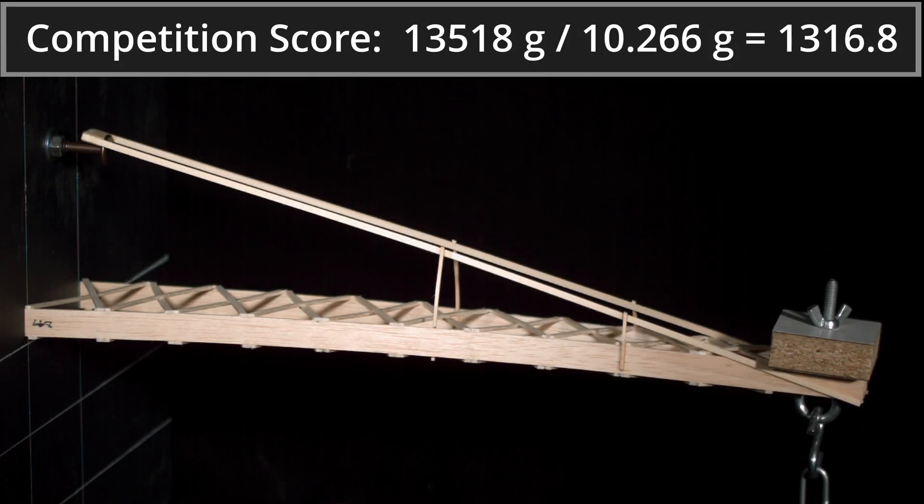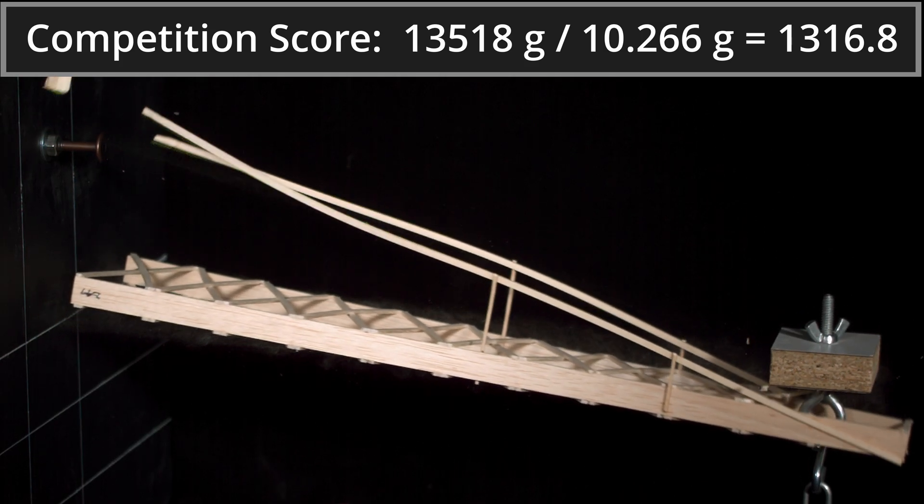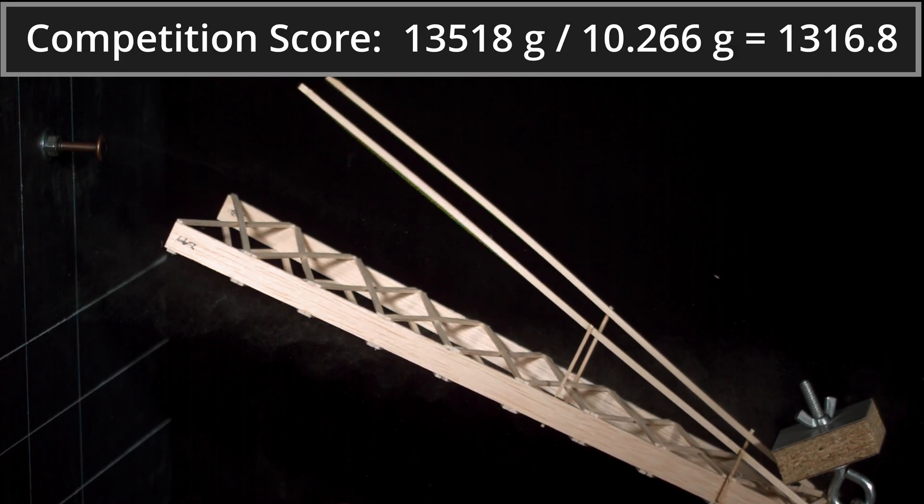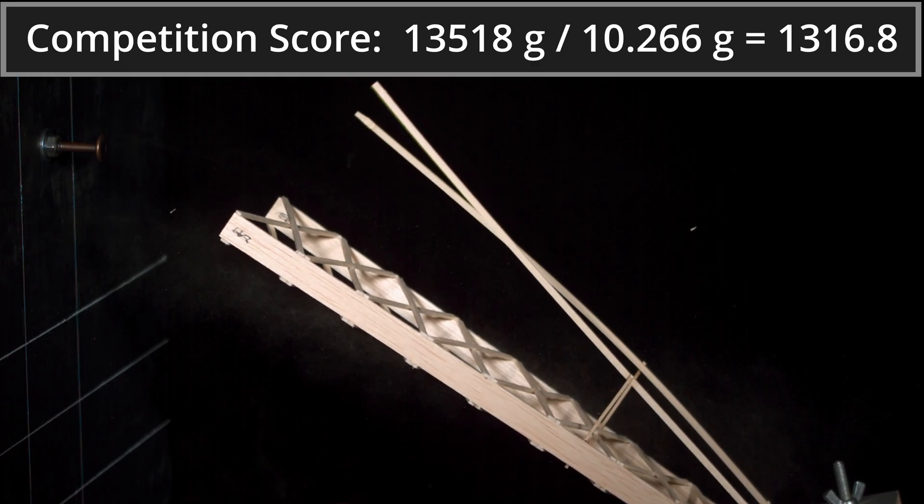This Boomi held 13.518 kg for an actual efficiency and competition score of 1316.8, which isn't very good. Remember these bonus builds really need to hold over 15 kg to make them competitive. If I freeze the video at the point of failure, we can see that the tension stick has sheared off the wall joint. Either that glue joint wasn't great, or more likely it just wasn't a long enough joint. As you watch that wall joint piece of basswood bounce off the wall and fly away, know that it landed in my workshop about 15 feet away on a shelf. It's a pretty crazy amount of force involved with these bonus Boomis.